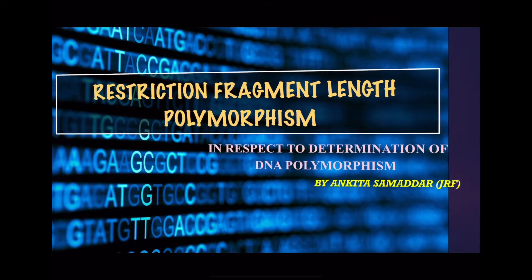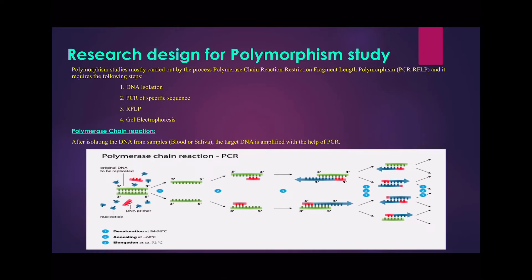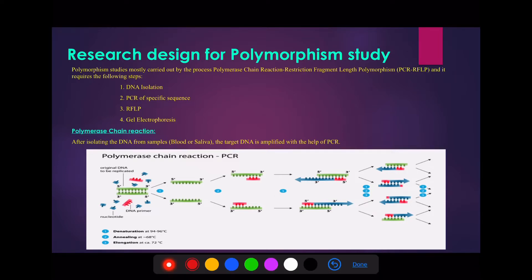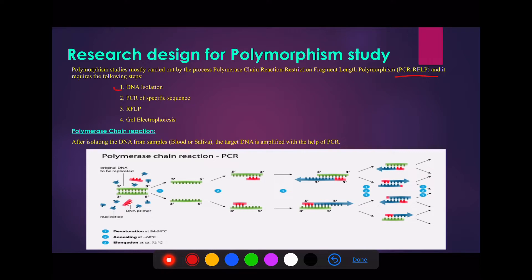Let's get started. DNA polymorphism can be detected using the Polymerase Chain Reaction Restriction Fragment Length Polymorphism, or PCR-RFLP technique. The research design for this technique involves DNA isolation, Polymerase Chain Reaction, and Restriction Fragment Length Polymorphism followed by Gel Electrophoresis. I have elaborately explained the PCR technique in a previous video — the link will be in the description. I am explaining the RFLP technique in this video with result interpretation and will make a separate video on Gel Electrophoresis later.